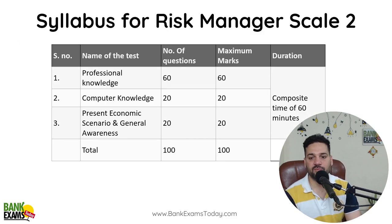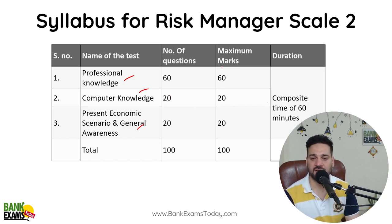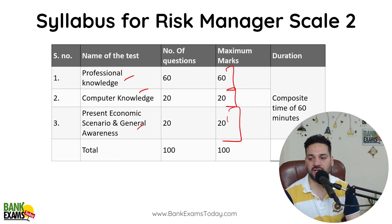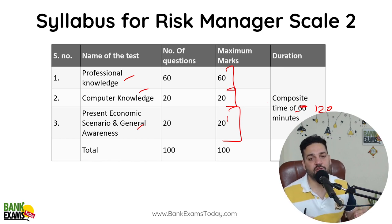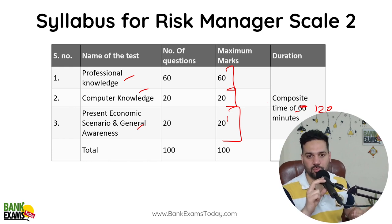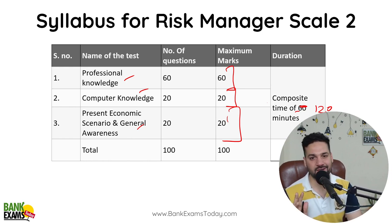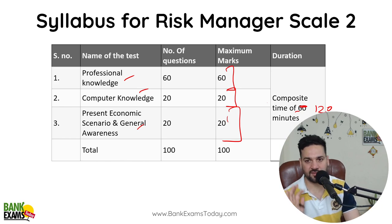This is the syllabus. Professional Knowledge is there, Computer Knowledge is there, and Present Economic Scenario and General Awareness. The marks are 60 for Professional Knowledge, 20 for Computer Knowledge, and 20 for Present Economic Scenario. Time management is not an issue because there is no quant and no reasoning.